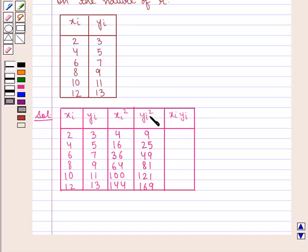yi square is given by 3 square 9, 5 square 25, 7 square 49, 9 square 81, 11 square 121, 13 square 169.